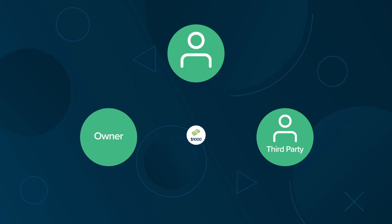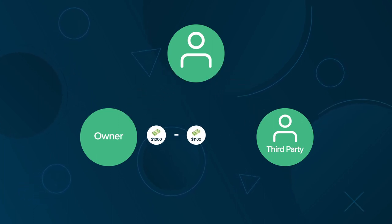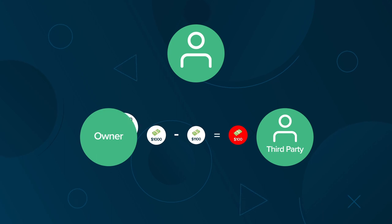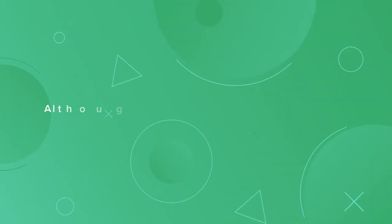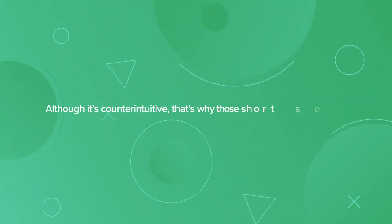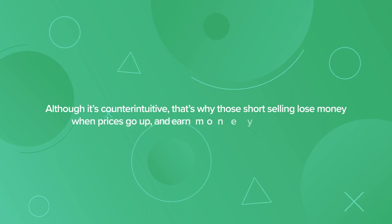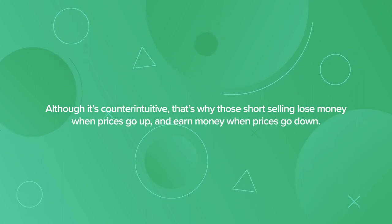But if the cheapest computer you can find is $1,100, and you must give back the borrowed computer, you'll need to buy the computer for $1,100 and incur a loss of $100. Although it's counterintuitive, that's why those short selling lose money when the prices go up and earn money when prices go down.